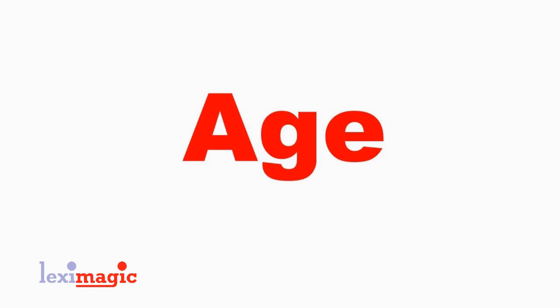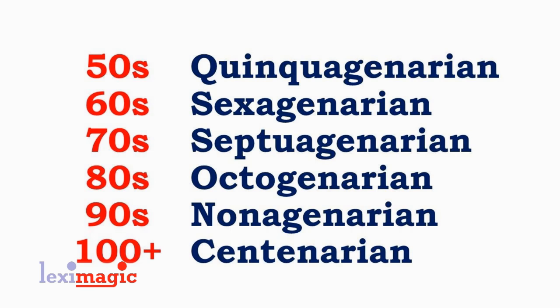Next, we look at words which relate to the age of a person. A quinquagenarian is a person in his or her fifties. A sexagenarian is a person in their sixties. A septuagenarian is a person in their seventies. An octogenarian is a person in the eighties of their age. A nonagenarian is a person in the nineties. And a centenarian is a person who has completed a hundred or more years.